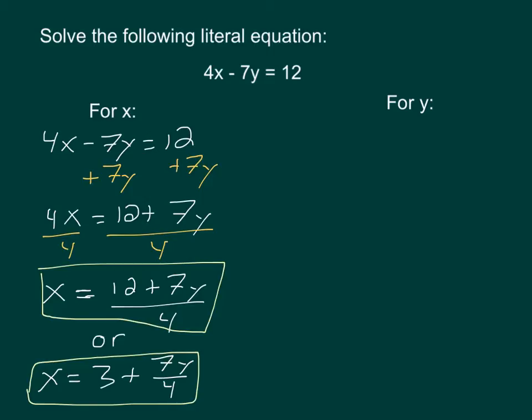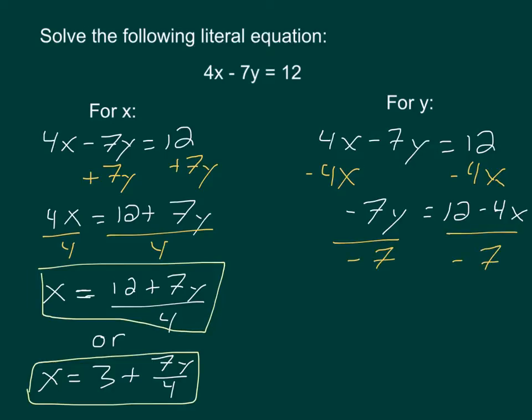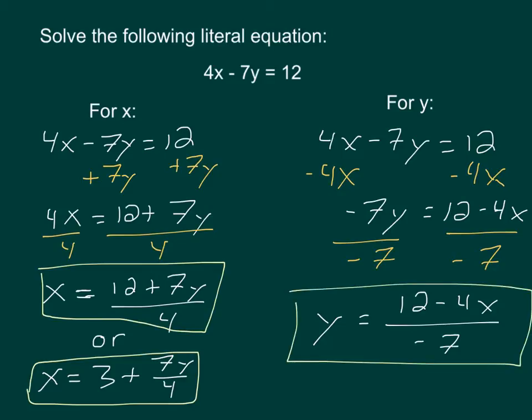For y, it's a very similar process. Starting with 4x - 7y = 12, I want to get y by itself. So I subtract 4x from each side. Don't lose track of that negative: -7y = 12 - 4x. Then divide each side by -7 because it's multiplying the y. That leaves you with y = (12 - 4x)/-7. Neither of those would reduce, so I'd just leave it like that.